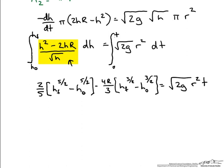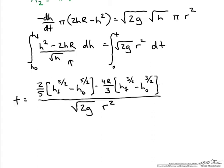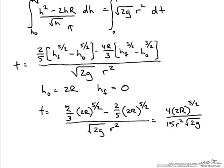Integrating and breaking up the height terms, we isolate t on the left side and divide by the square root of 2g times r squared, giving us an equation that models the time it takes to empty our spherical tank. For a full tank the initial height is 2R and the final height is 0. Plugging these in, the time to drain a full tank depends on the large radius R, the small drain radius r, and the gravitational constant g.